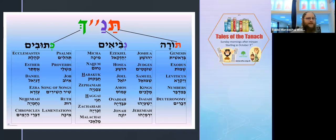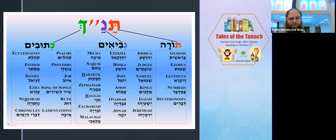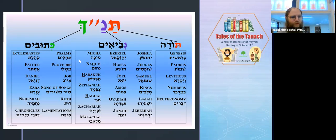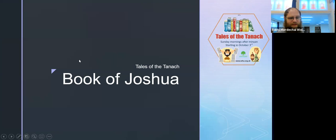Tanakh starts - the Prophets start with the Book of Joshua. Before we come on to the actual Book of Joshua, we're just going to look a little bit at what a prophet actually is.